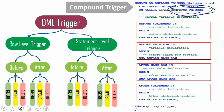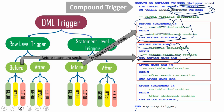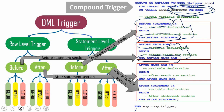Whatever logic you wrote in the before statement-level trigger now comes within the first section. Each section is identified by a keyword. The before statement section is identified by BEFORE STATEMENT and END BEFORE STATEMENT. Similarly, BEFORE EACH ROW and END BEFORE EACH ROW defines the before each row section. We also have a section for AFTER EACH ROW and a section for AFTER STATEMENT.